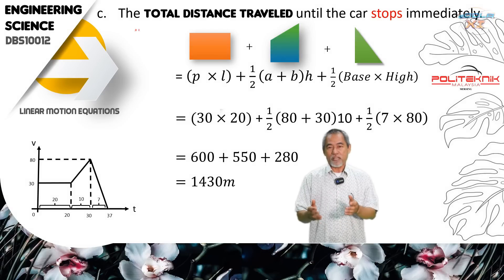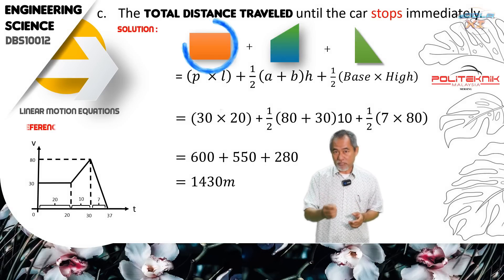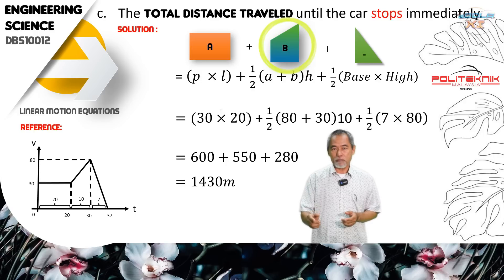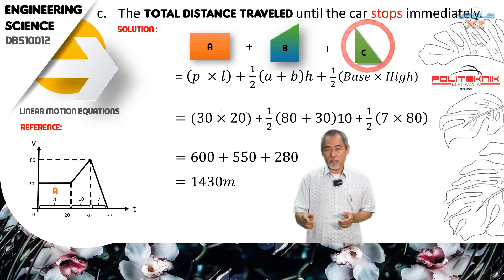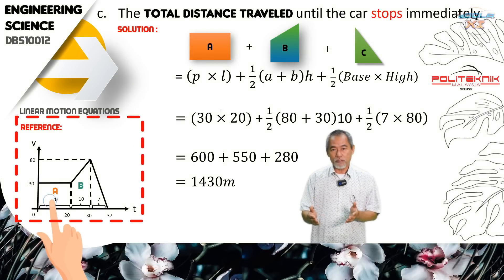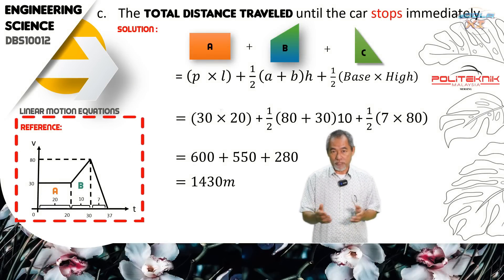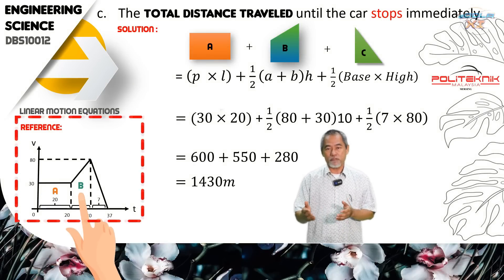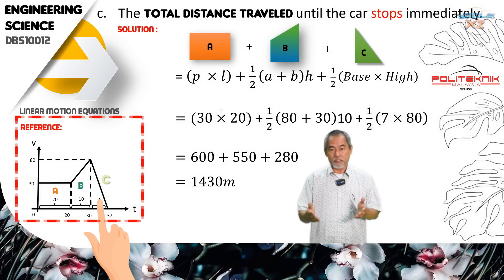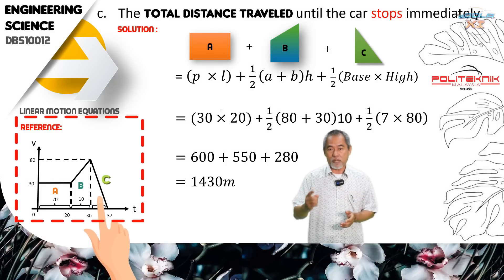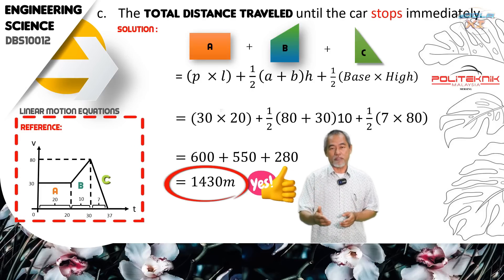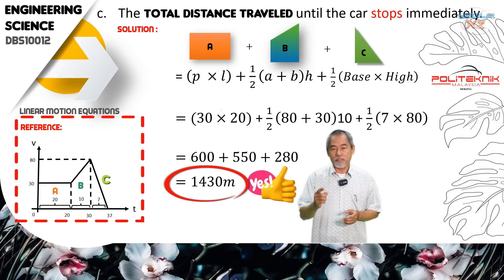We calculate the total distance travelled until the car stops. From the graph, there are 3 parts: A, a rectangular part; B, a rectangular part; and C, a triangular part. The answer is 1,430 meters.